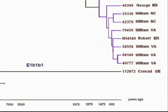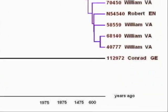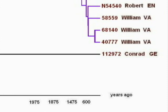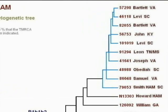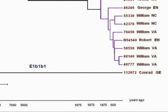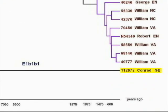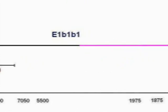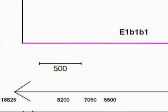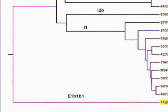Zooming in, we can see the time scale in years. Anything beyond 1,500 years ago will probably fall into a different Ham family group. You should notice that the software program automatically sorts the data into groups. And if we follow Conrad back in time — kit number 112972 — then we can see that we have to go back some 16,000 years before he connects to any of the other groups.